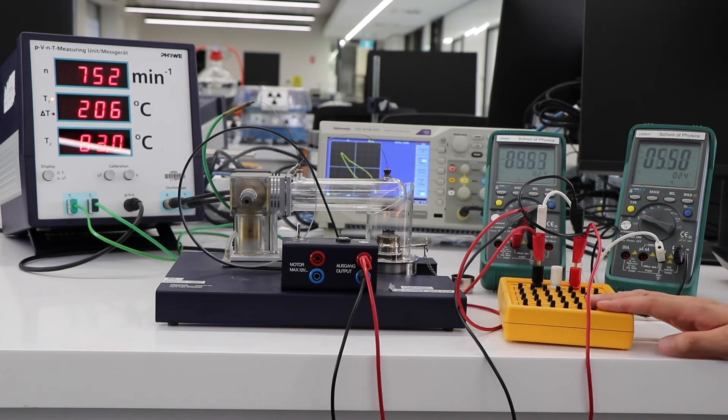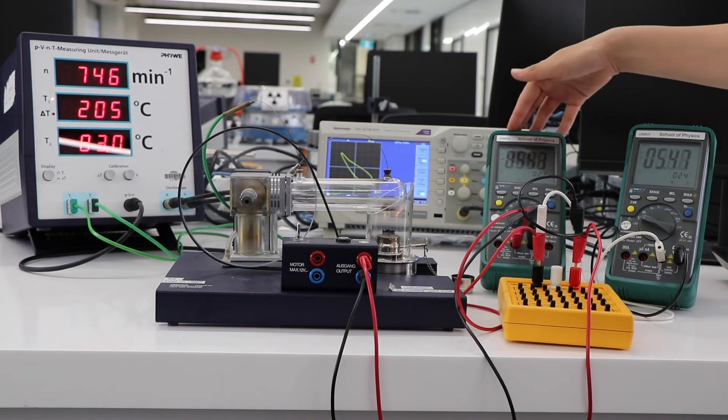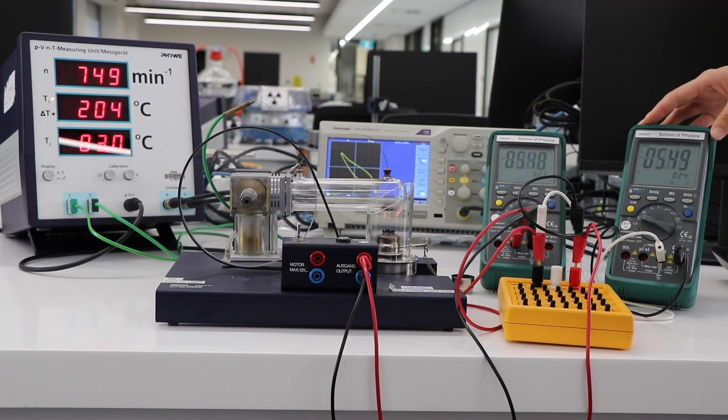And what we have is a resistor in series and a voltmeter in parallel to the resistor. And this way we can measure the power output and therefore the electrical work that the Stirling engine is generating.